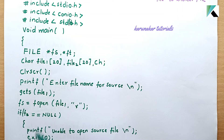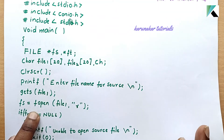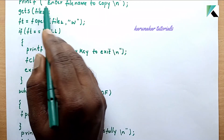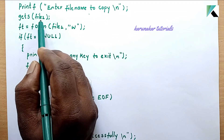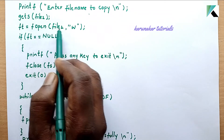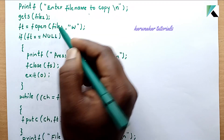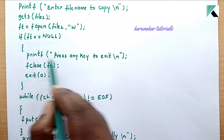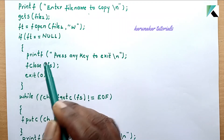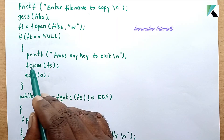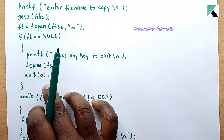Similarly for the target file: print 'Enter file name to copy', get the target file name using gets into file2. Then Ft equals fopen of file2 in write mode — target.txt. If Ft equals null, print 'Unable to open file, press any key to exit'. If source file is open, we proceed; otherwise close and exit.